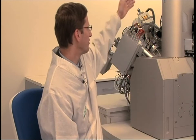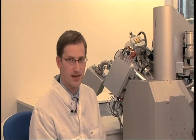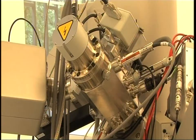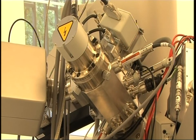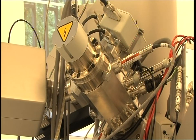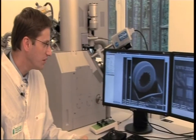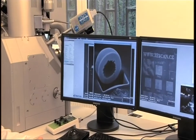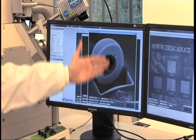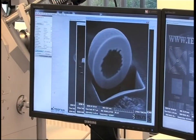So far, we have only viewed the sample. Now we want to change it, modify it, or generate it. The focused ion beam serves this purpose. The tool allows adding or removing material from our sample. Here, for example, we see a particle which we have cut in half. As a result, we can look inside.